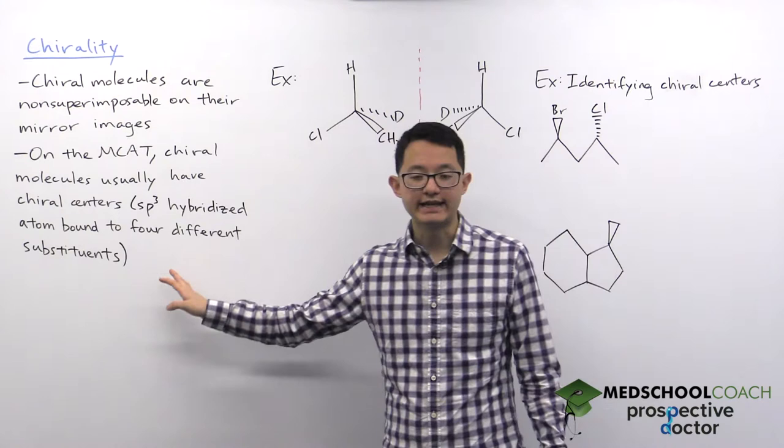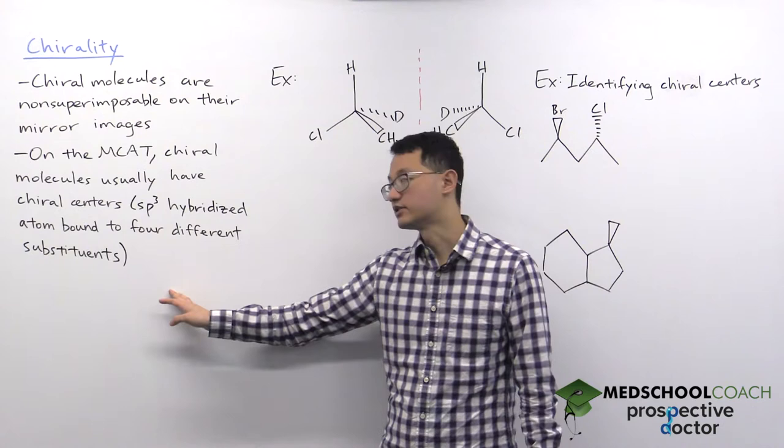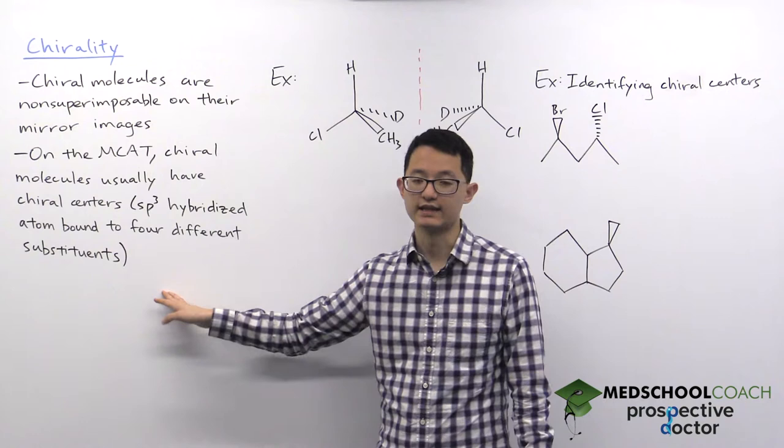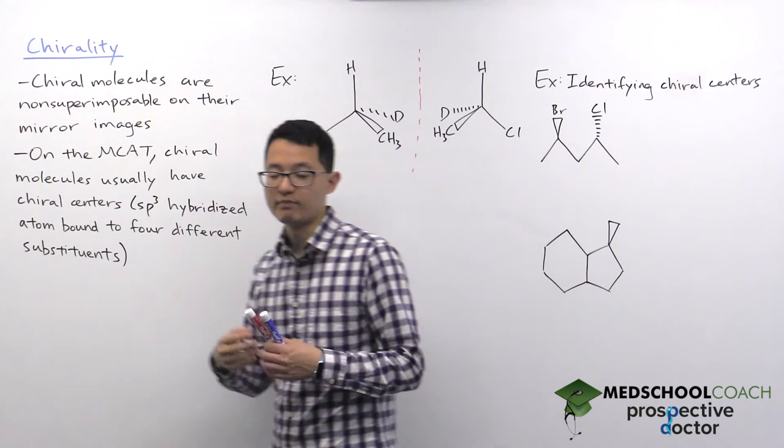Now these two molecules are chiral because they contain chiral centers. Not all chiral molecules have to have chiral centers, but on the MCAT, usually chiral molecules will have chiral centers. Chiral centers are sp3 hybridized atoms bound to four different substituents. The fact that they are sp3 hybridized means they have a tetrahedral electronic geometry, which we can see in both of these molecules.